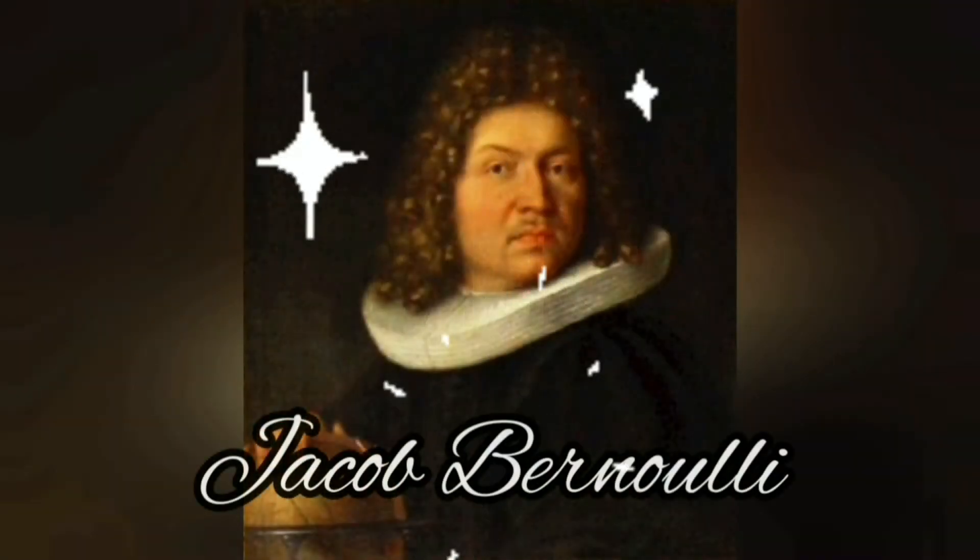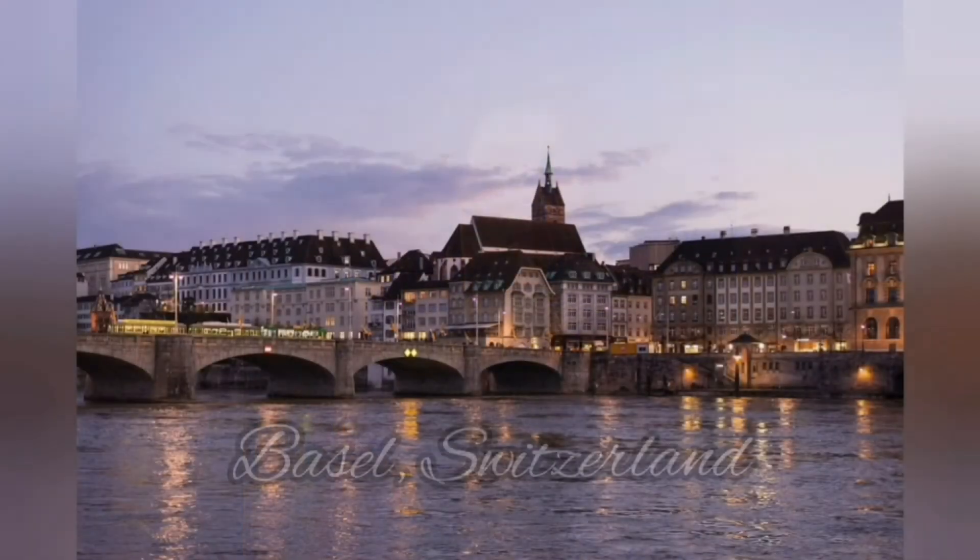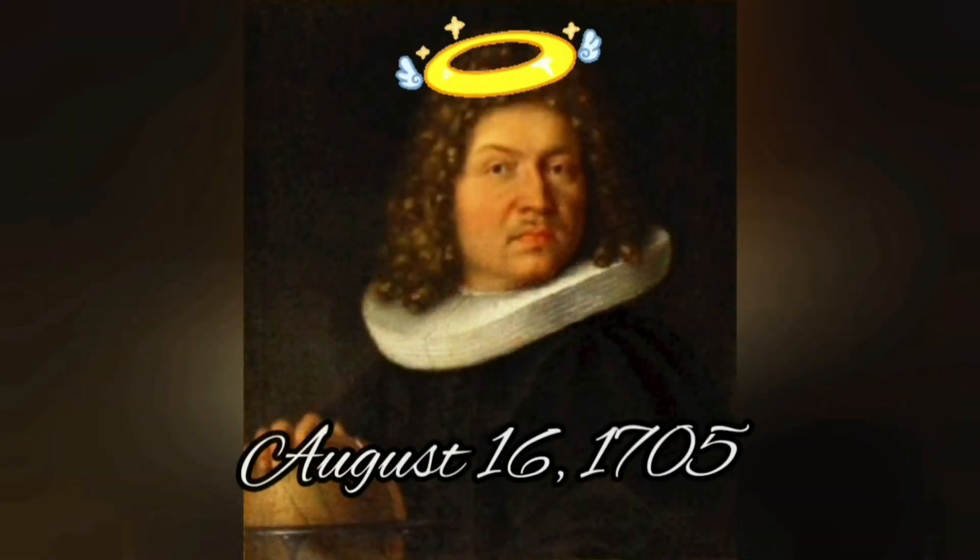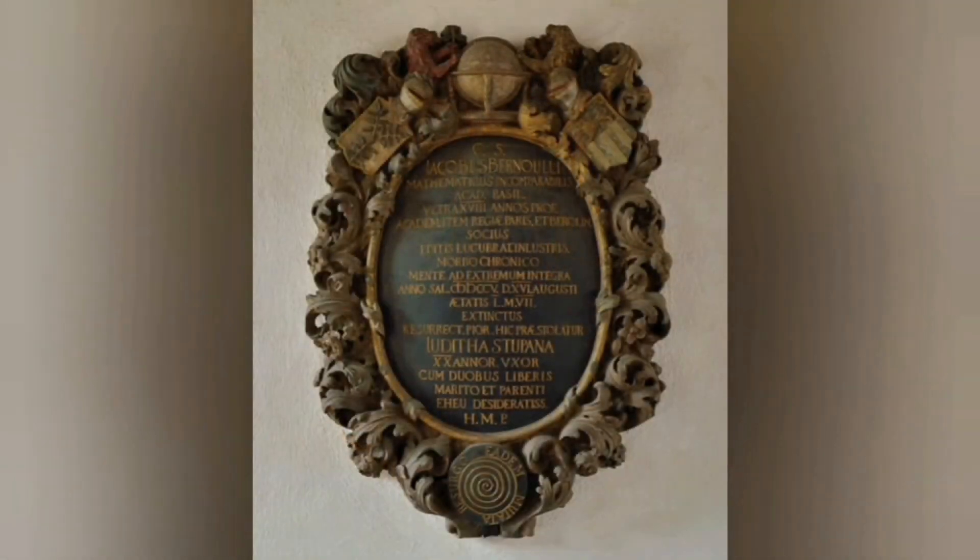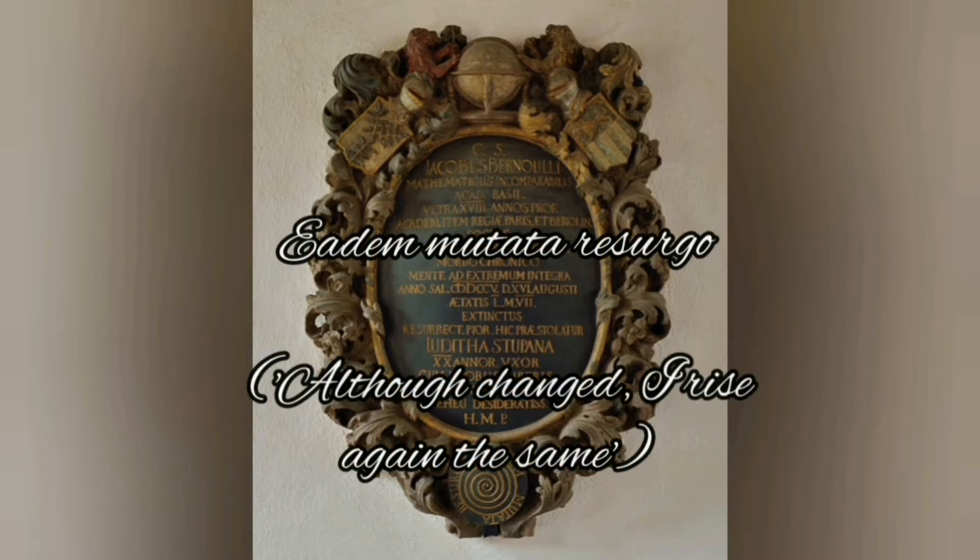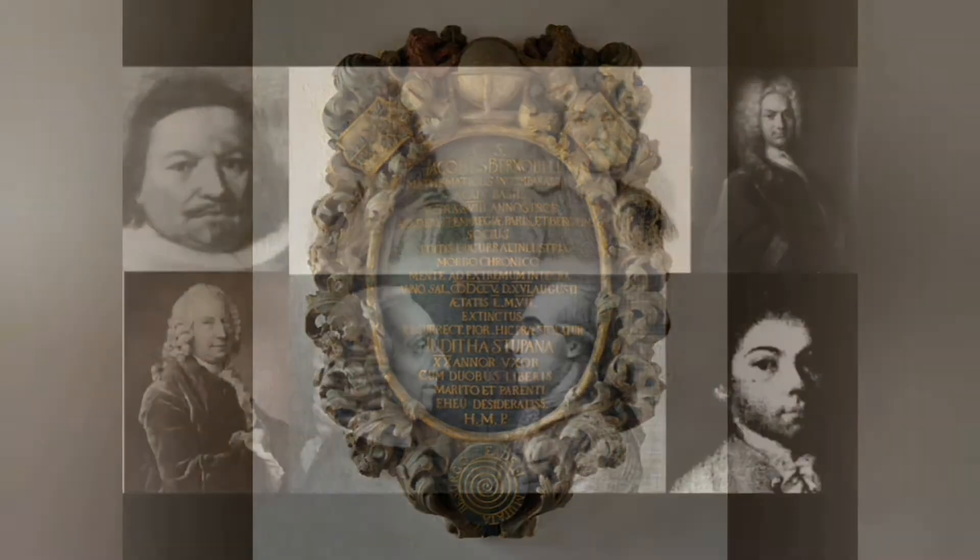We'll discuss that formula in the how section. Moving on, the who of binomial distribution is Jacob Bernoulli, born January 6, 1655 in Basel, Switzerland. He died August 16, 1705 at the age of 50 from chronic illness and had a logarithmic spiral and the motto 'Although changed, I rise again the same' engraved on his tombstone. He had been the first of the Bernoulli family of Swiss mathematicians.